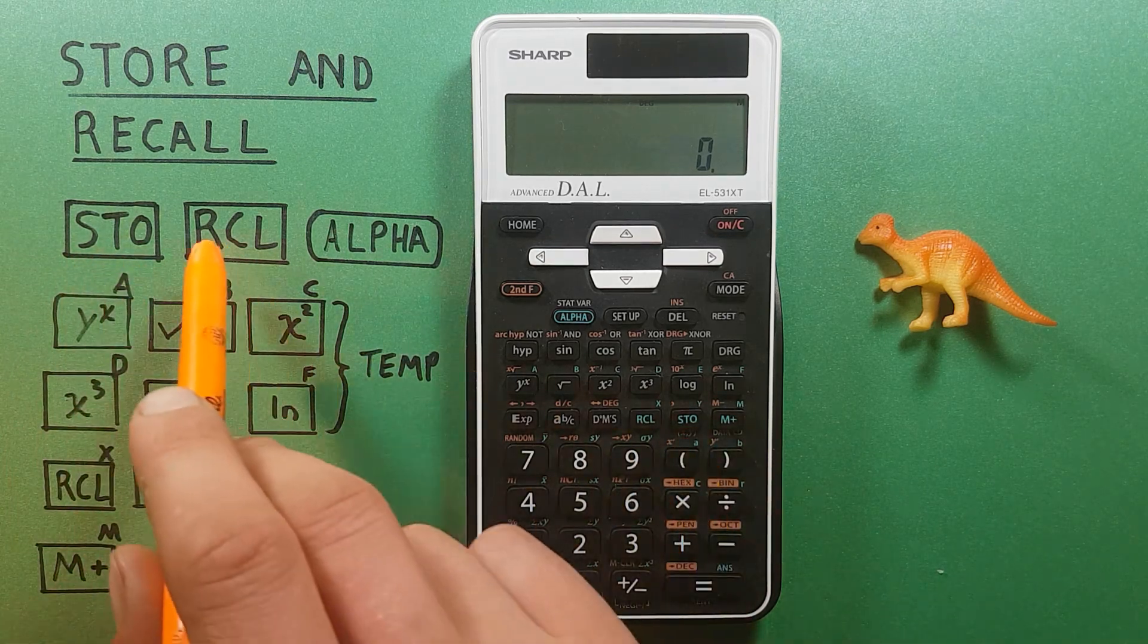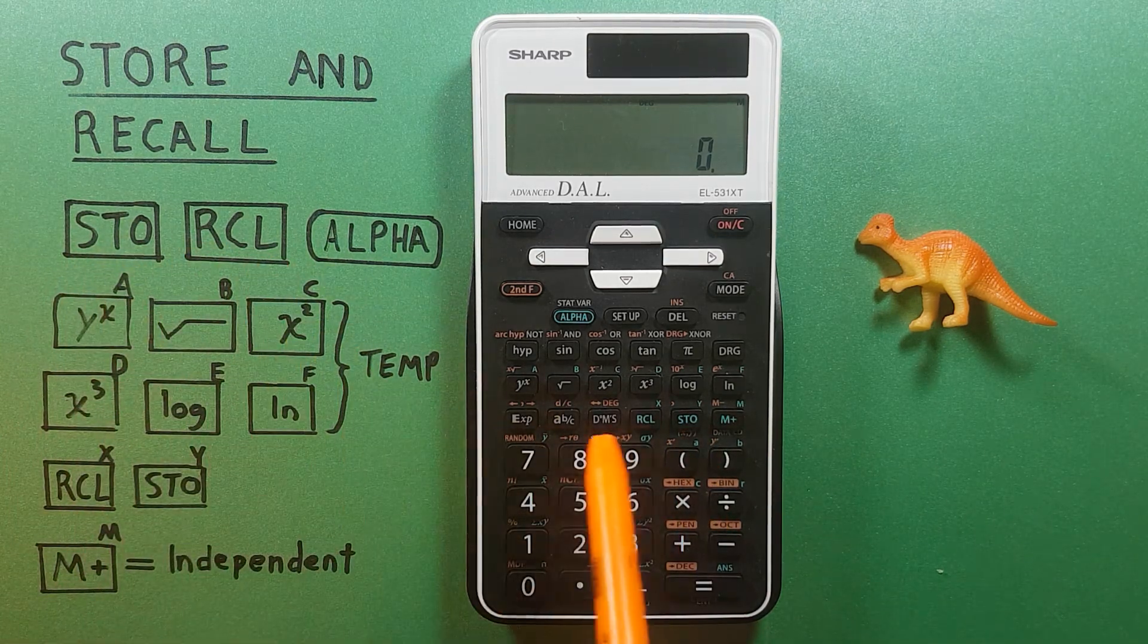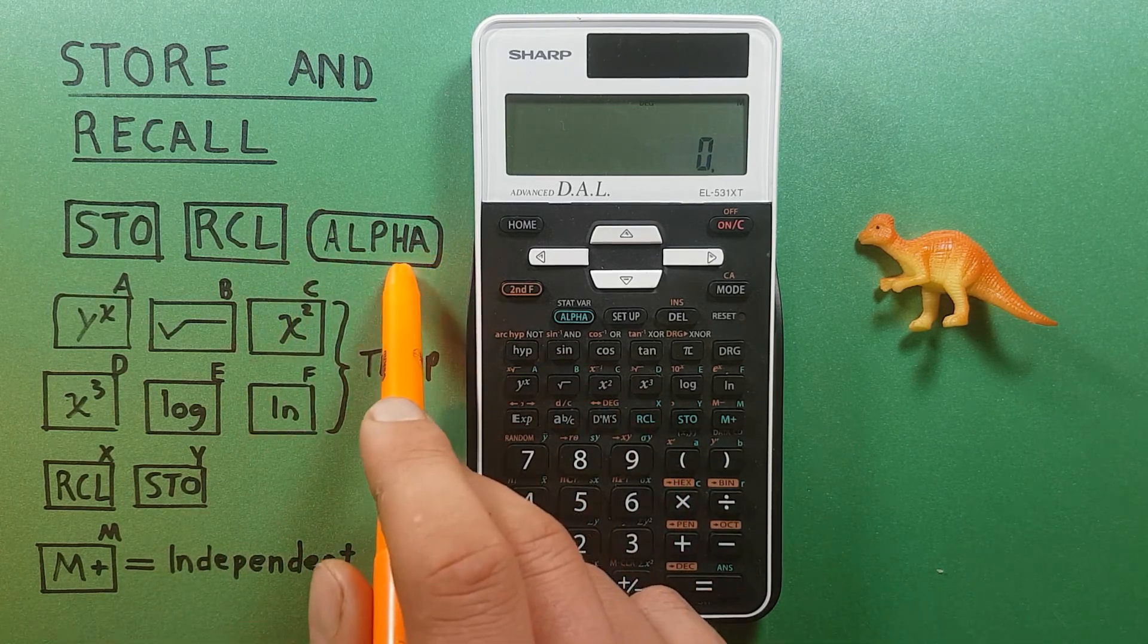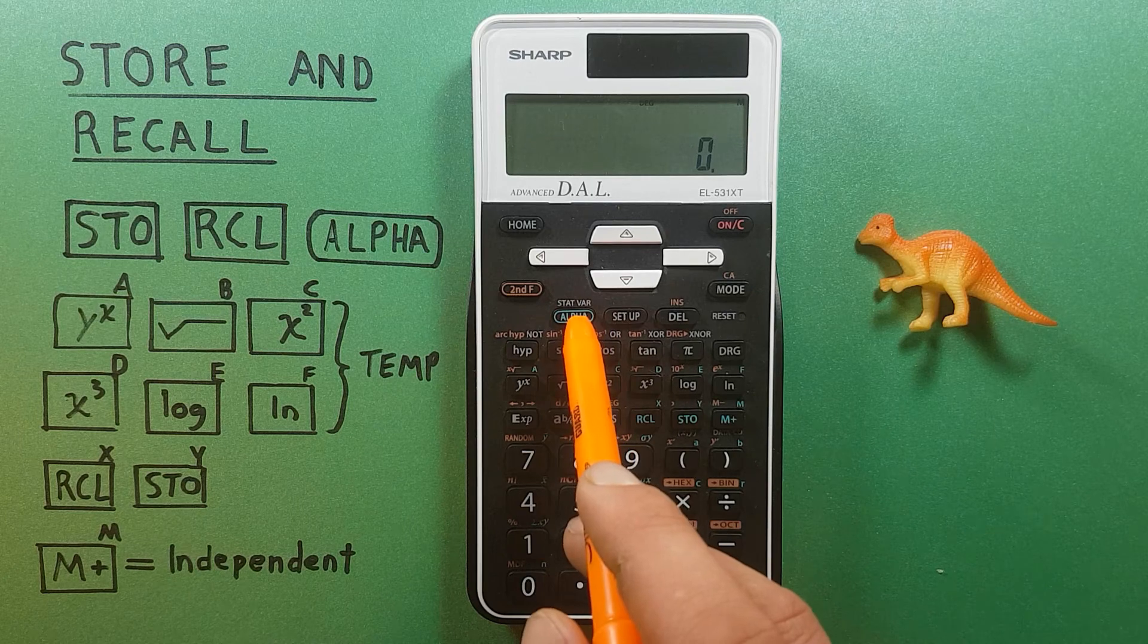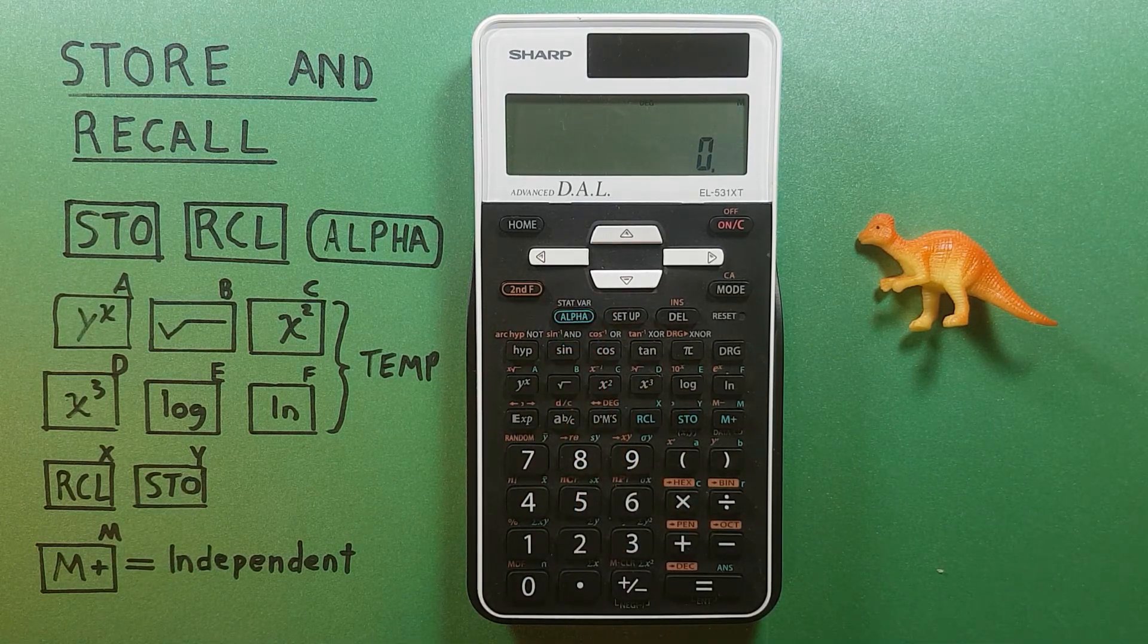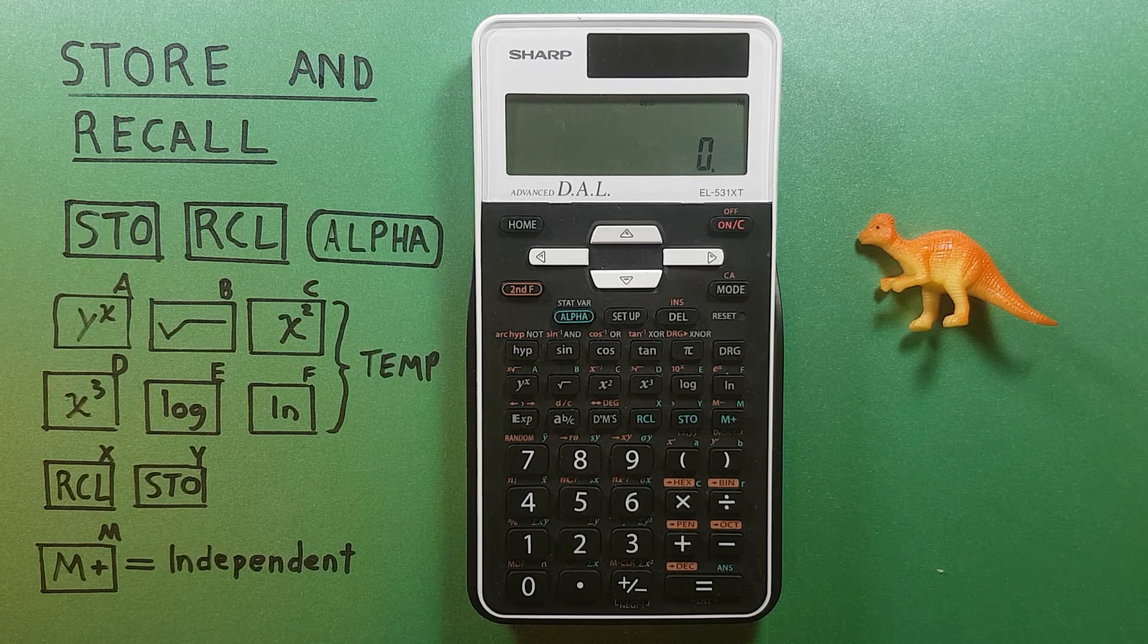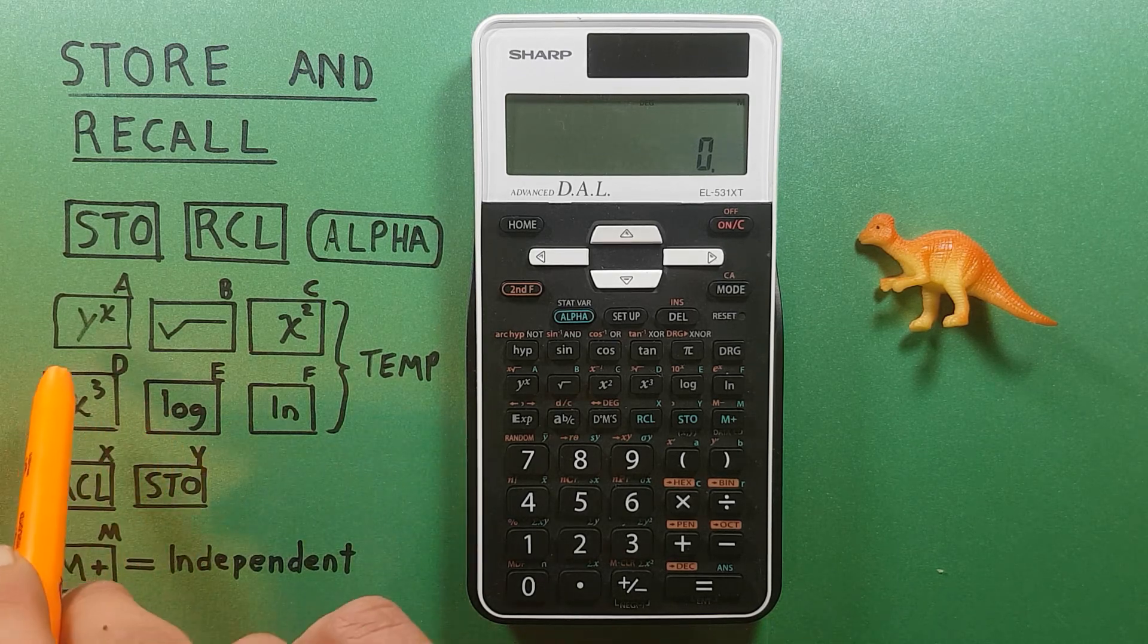We'll use the RCL key for recall right here, as well as the alpha key to help define our slots located right here. This calculator has a total of eight temporary memory slots lettered A through F.